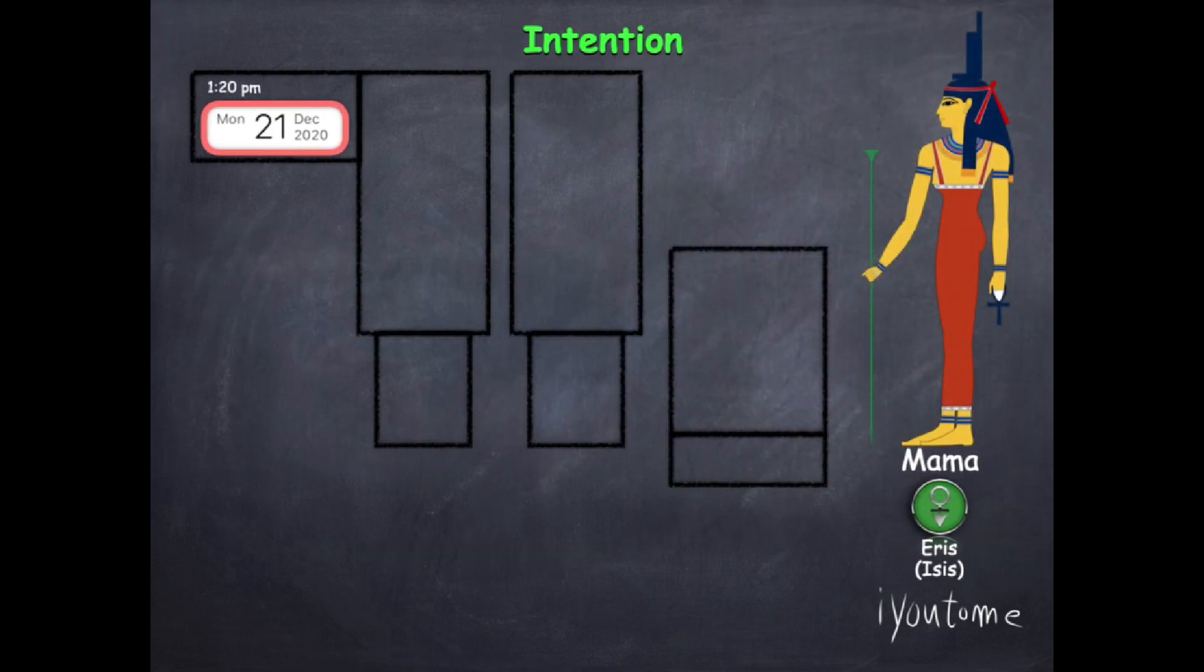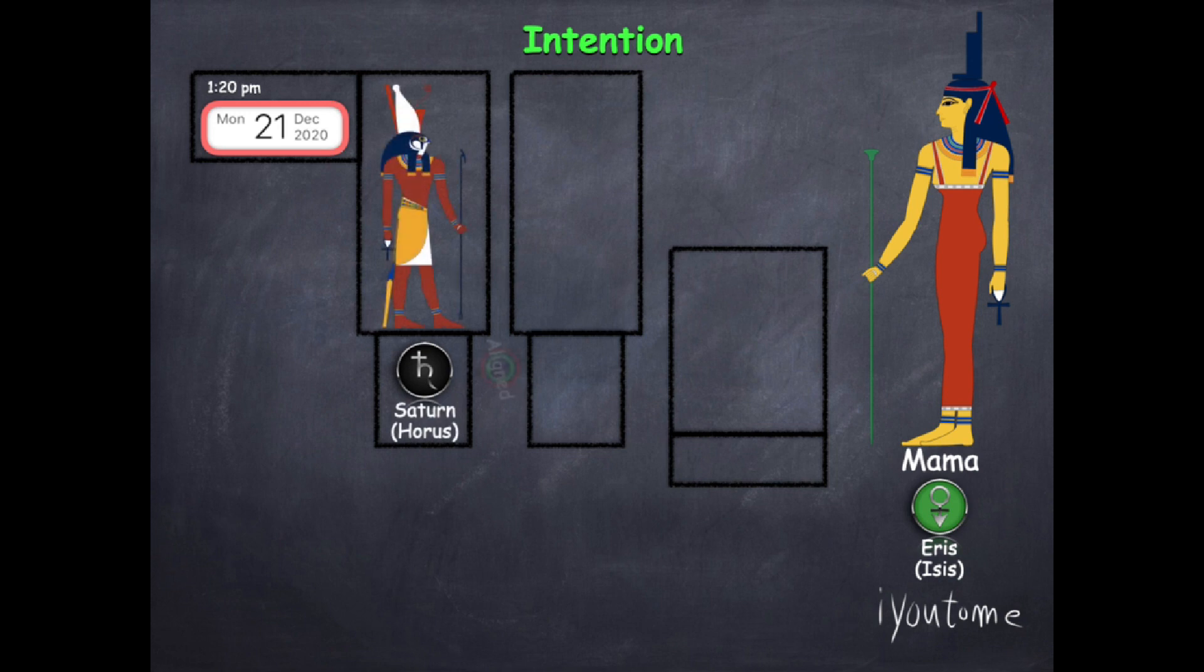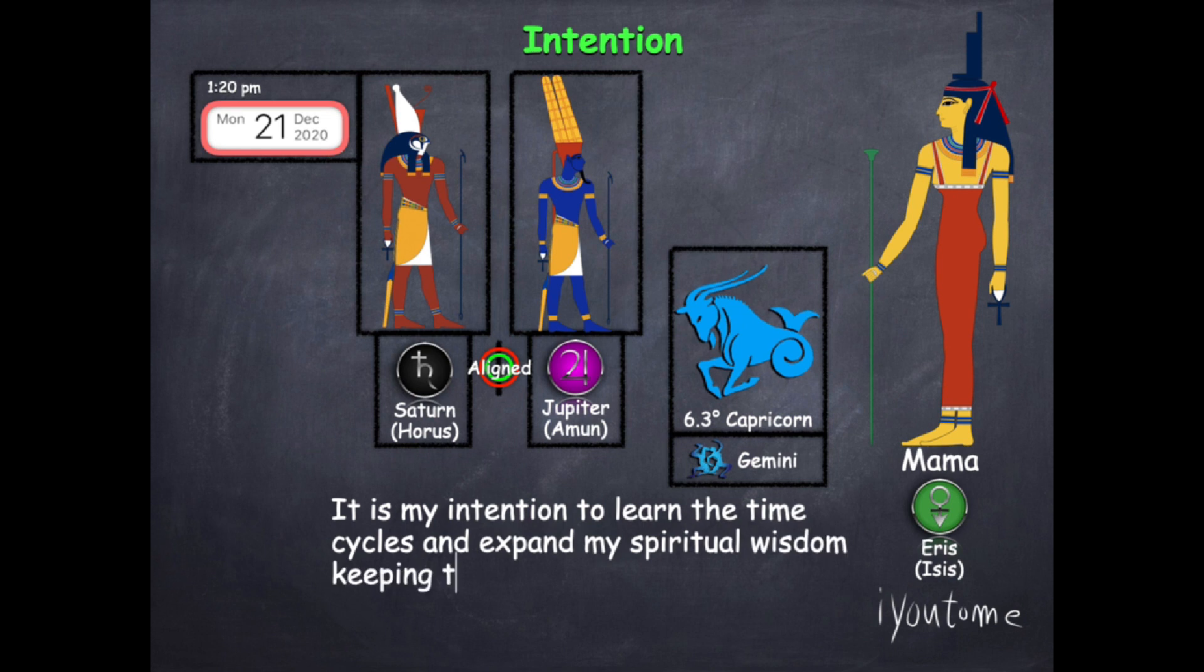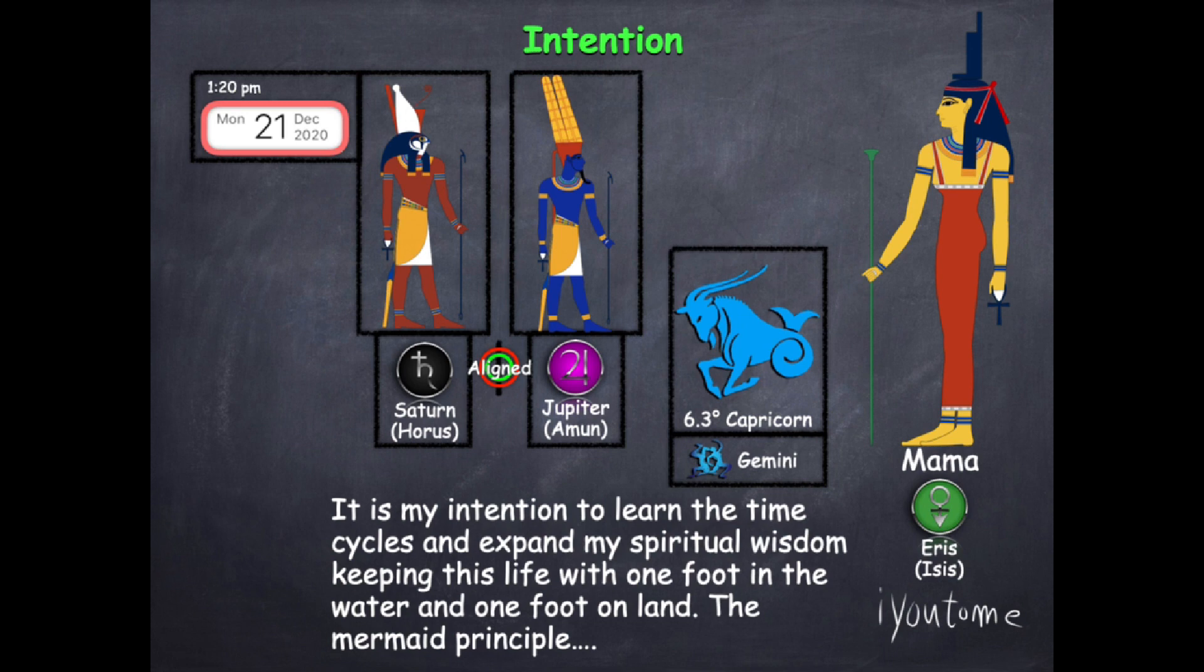The next alignment happens on December 21st, 1:20 PM Eastern Standard Time. This one everybody's talking about: alignment between Saturn father time which aligns with Jupiter law and end of cycles in Capricorn the mermaid principle in the sub harmonic of Gemini twinning of this yin yang. This is my intention: It is my intention to learn the time cycles and expand my spiritual wisdom keeping this life with one foot in the water and one foot on the land, the mermaid principle.